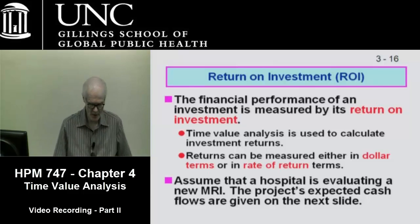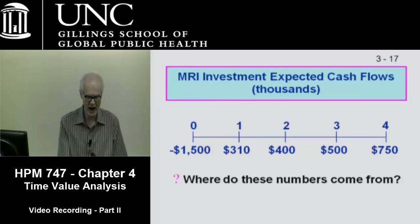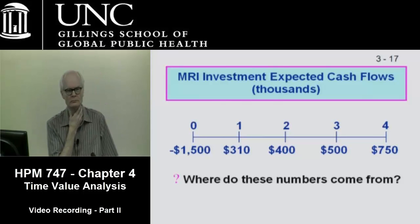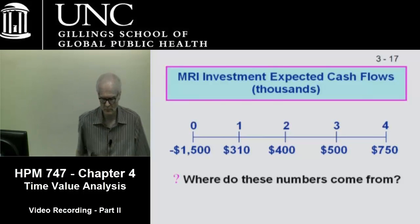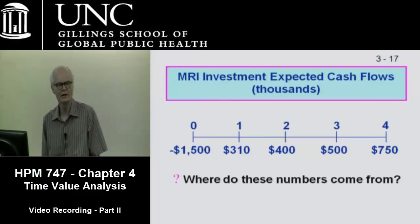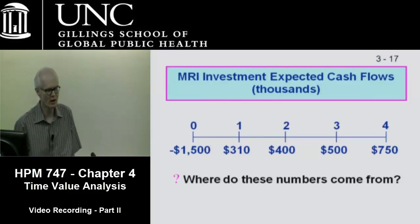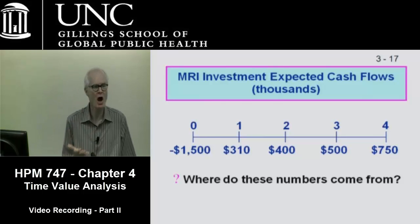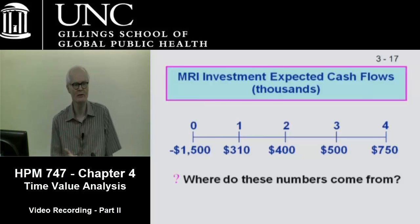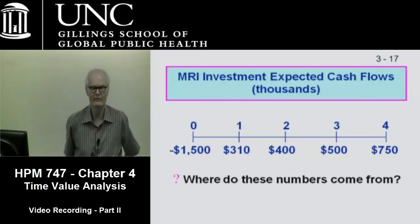So let's assume that we're looking at acquiring an MRI and we get these cash flows. Where would these numbers come from? The negative 1,500 — these are thousands of dollars — represents the purchase, the capital cost, the purchase price of the MRI, and the installation cost. So where would the other numbers come from?